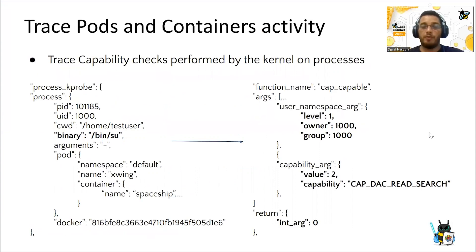If you want to know what capabilities your container or application may require when running, Tetragram is a good choice. As shown in this demo, the command inside the container triggered a capability check done by the kernel — a cap_dac_read_search inside user namespace level one, meaning it's nested one level, owned by user ID 1000, that is an unprivileged user namespace — and the result is zero, concluding that the capability check succeeded.